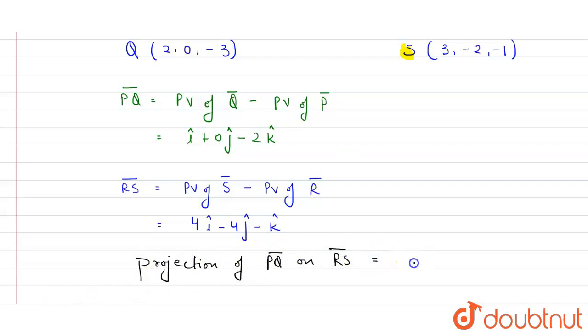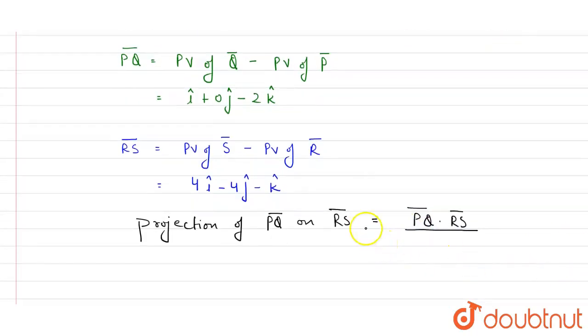which is equals to PQ vector multiplied with RS vector, and divide by, here in denominator, we have the backward vector. That is, the vector on which projection is being to calculate. RS vector. Here I will write RS vector, its magnitude.